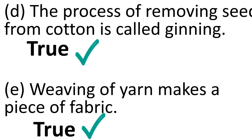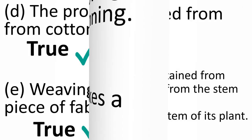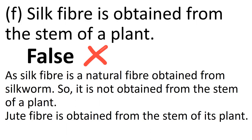Statement D: The process of removing seed from cotton is called ginning — it's true. Statement E: Weaving of yarn makes a piece of fabric — again, it's a true statement. Statement F: Silk fiber is obtained from the stem of a plant. Silk fiber is a natural fiber obtained from silkworm, so it is not obtained from the stem of a plant. However, jute fiber is obtained from the stem of its plant. Making this statement false.